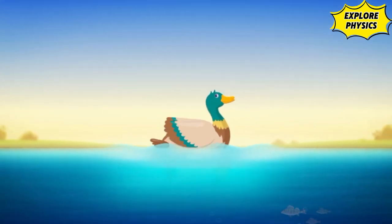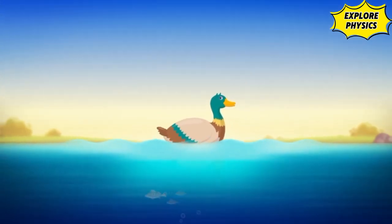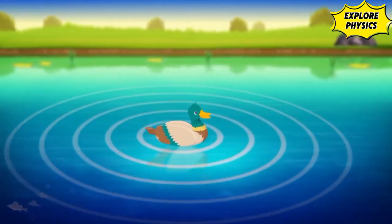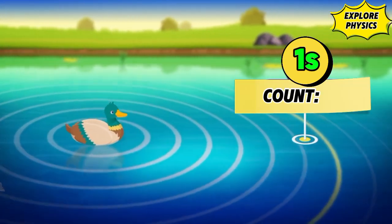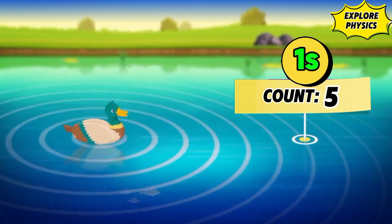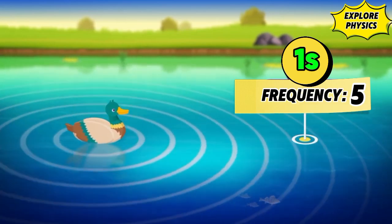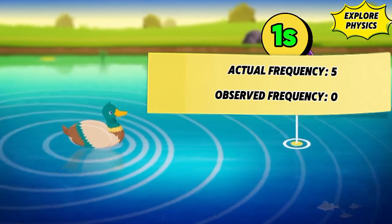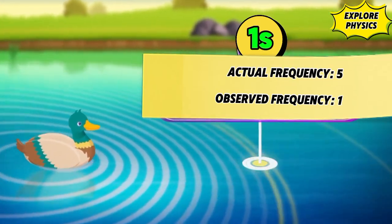Notice that in one second there are a certain number of waves that pass by a fixed point — this is what we call the frequency of a wave. Now as the duck moves, the apparent frequency changes: we see more waves passing by the fixed point in front, hence increasing the observed frequency compared to the actual.